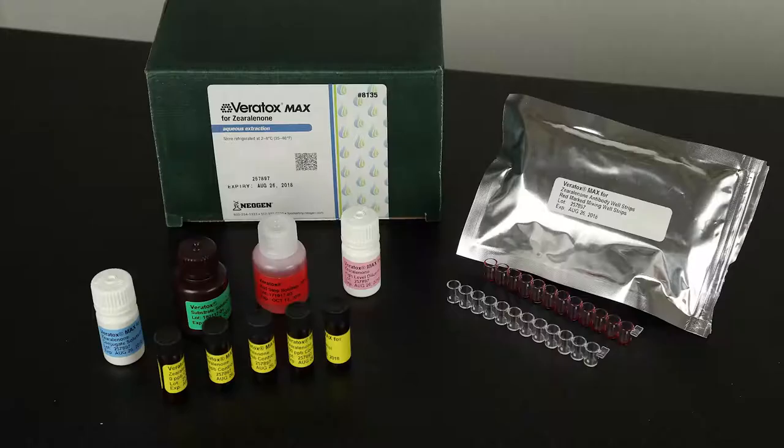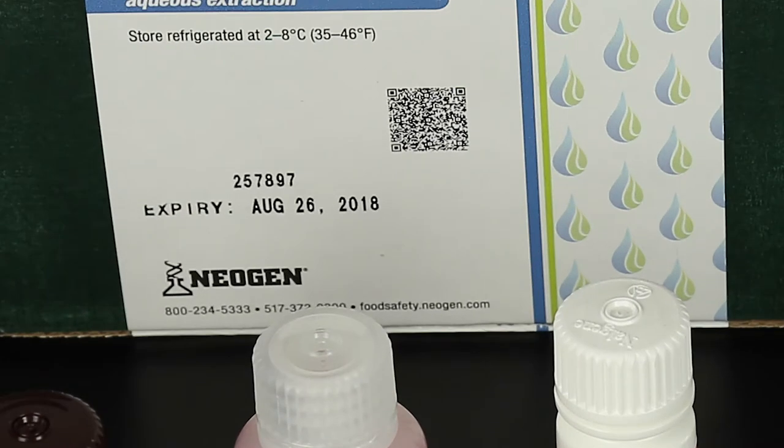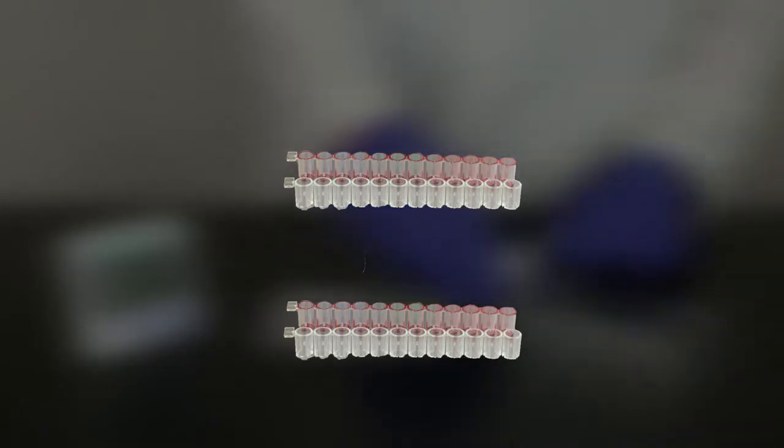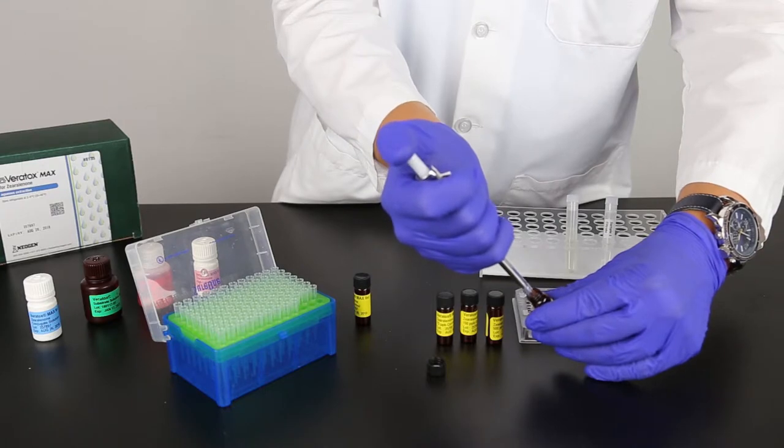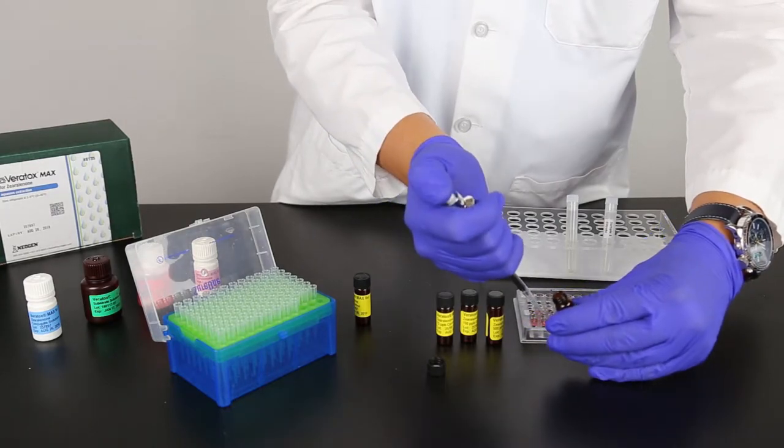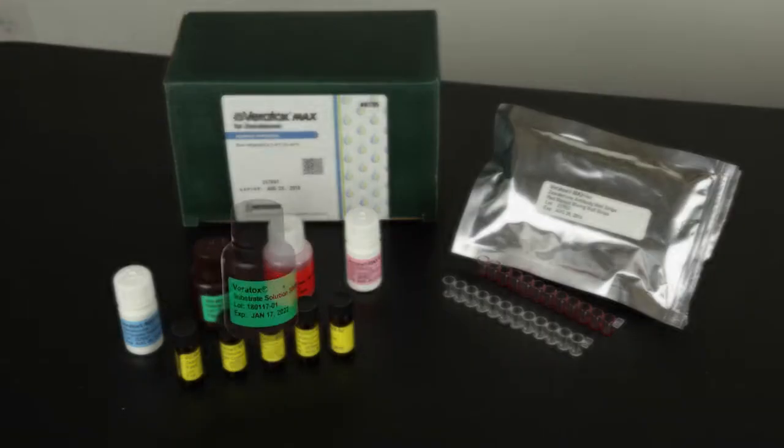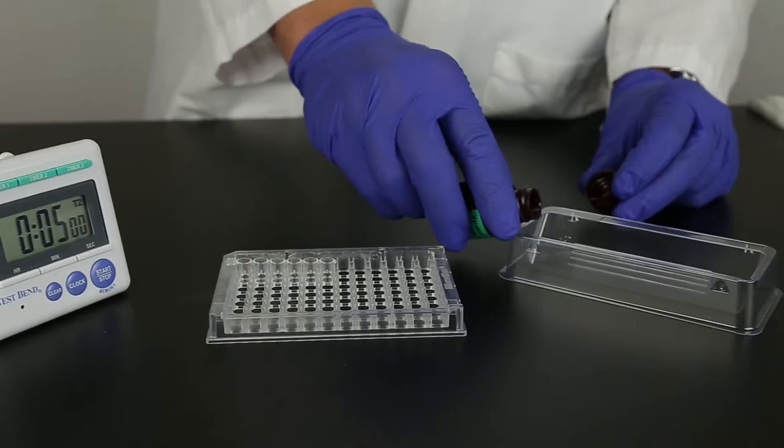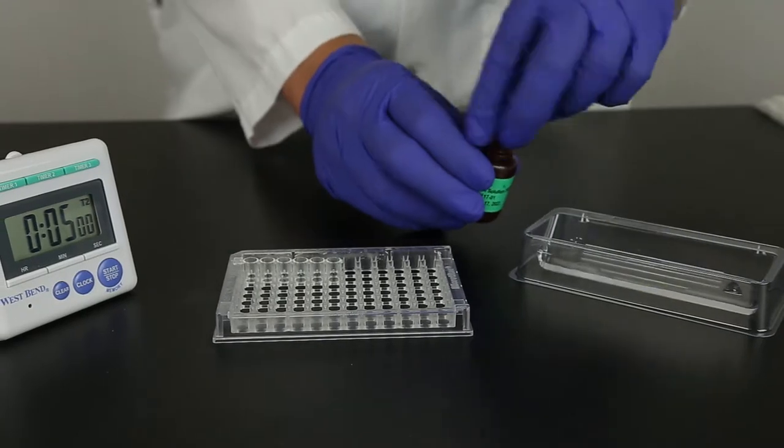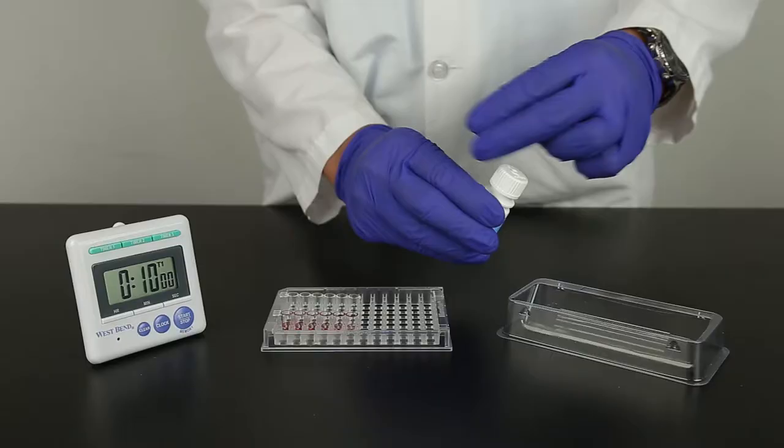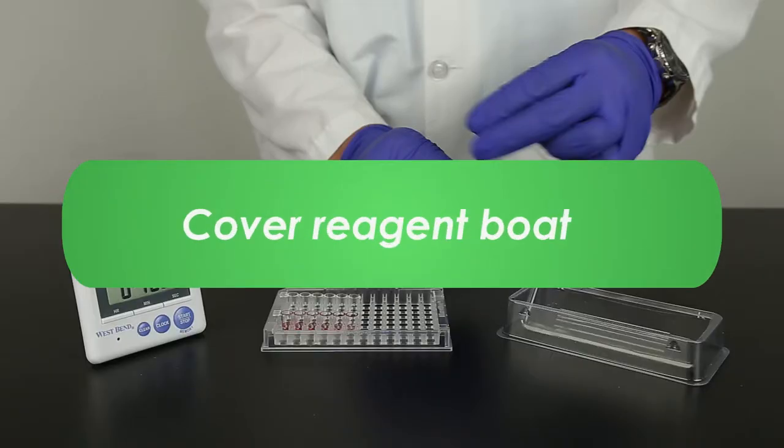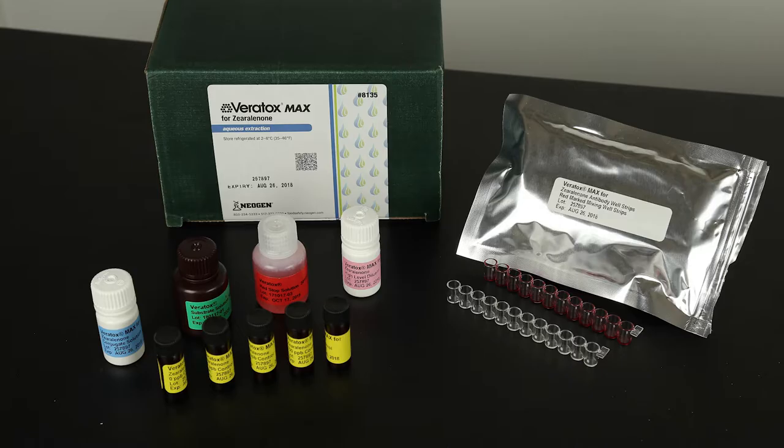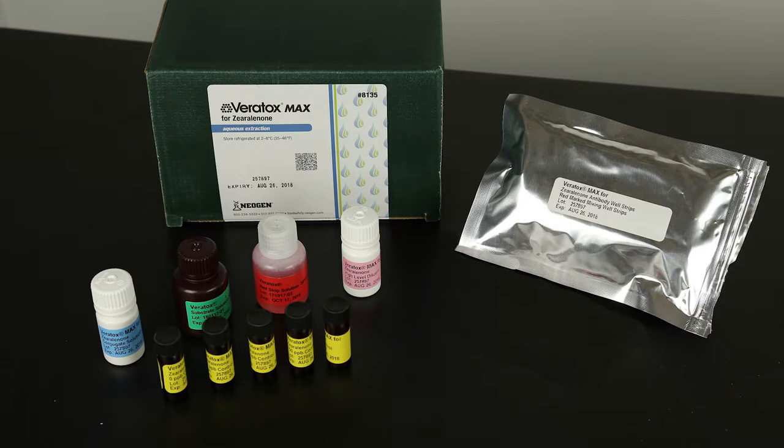Precautions: Do not use kit components beyond the expiration date. Do not run more than 24 microwells at a time. Follow proper pipetting techniques, including the proper priming of tips. The substrate should be clear; discard if it has turned dark blue. Only pour the needed volume of substrate into a reagent boat. Cover the reagent boat to keep the substrate protected from light until it is needed. Antibody wells should be kept in the foil pouch until needed.